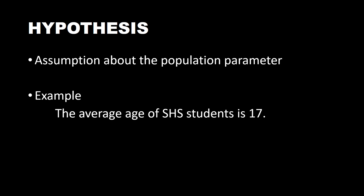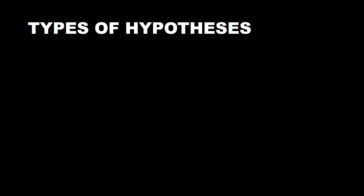When constructing a hypothesis, we state the measure first — meaning our population measure — whether it's the mean, mode, median, standard deviation, or others. Then we state our population. For example, the population here is 'senior high school students.' After that, we provide the value for the parameter. That is how we construct our hypothesis.